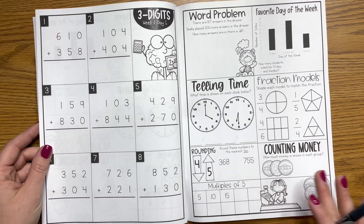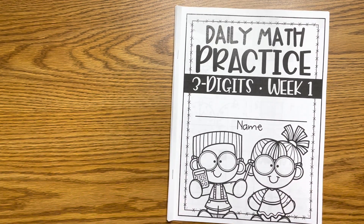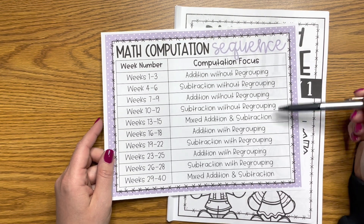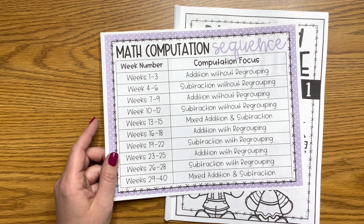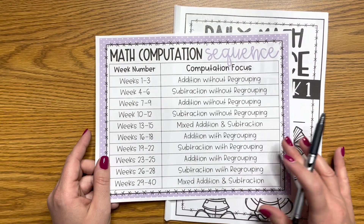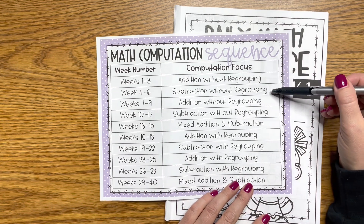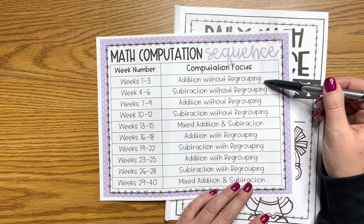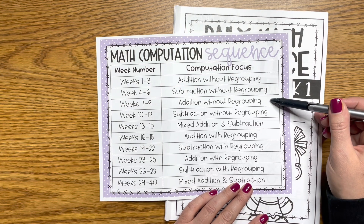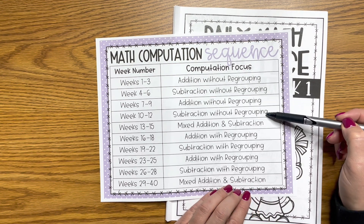Every single day looks very similar, and in time your students will be able to do a lot on their own. You might be wondering about regrouping, or whether your students need all the weeks of addition and subtraction. You can skip around. Within the first couple of pages of the file on TPT you'll see a sequence so you can find where to start. I like to switch back and forth between addition and subtraction because otherwise they seem to forget one when you come back to it.